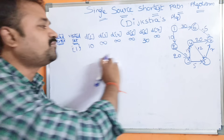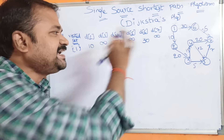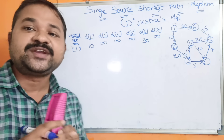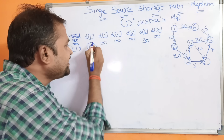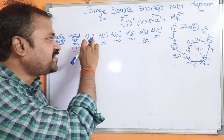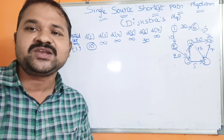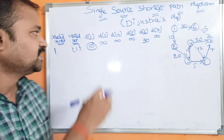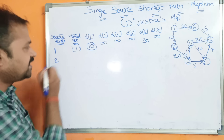Next, we have to select one of these vertices as the next vertex. Out of 10, 30, and infinity, which is the minimum value? 10 is the minimum value. So 10 is the cost of the second vertex, and the next vertex will be 2. Because out of 10, 30, and infinity, 10 is the minimum — so that minimum-cost vertex becomes the next vertex. We assume vertex 2 as the next vertex.